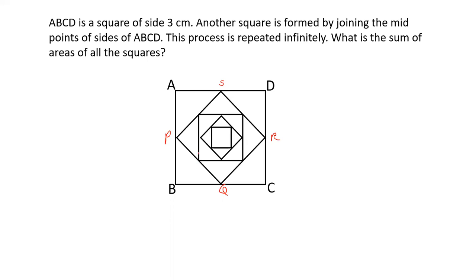Now joining the midpoints of PQRS let us say there is another square XYZW and this process is repeated infinitely. Now we have to calculate the sum of areas of all the squares.